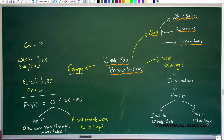Instead of going through wholesalers and retailers, organizations will also sell through their own branches, and that is called self retailing. When organizations sell through their own branches by following self retailing, that organization should make a distinction between the profit made by the branch — what is the profit made due to wholesale sale and what is the profit made due to retailing. This distinction is required because through branches we are avoiding wholesaler and retailer steps and doing everything on our own.